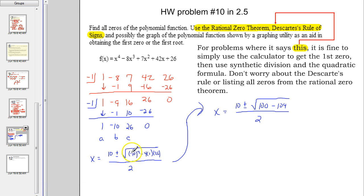So negative 10 squared is 100. Negative 4 times 26 is negative 104. So 100 minus 104 is a negative 4. That's what we have underneath that radical.